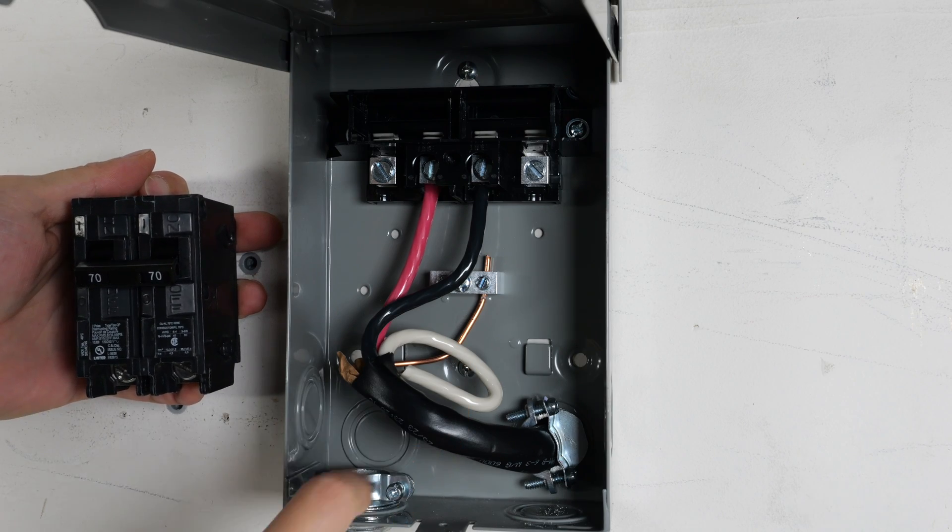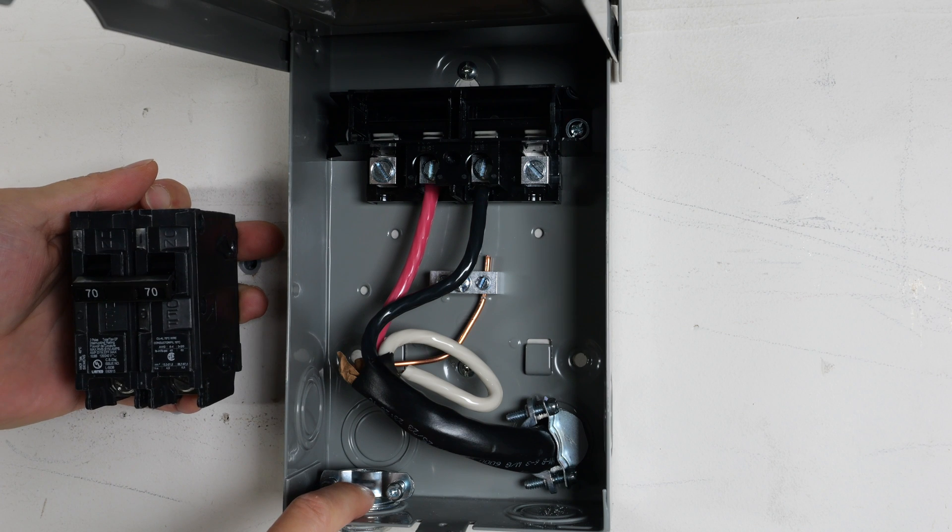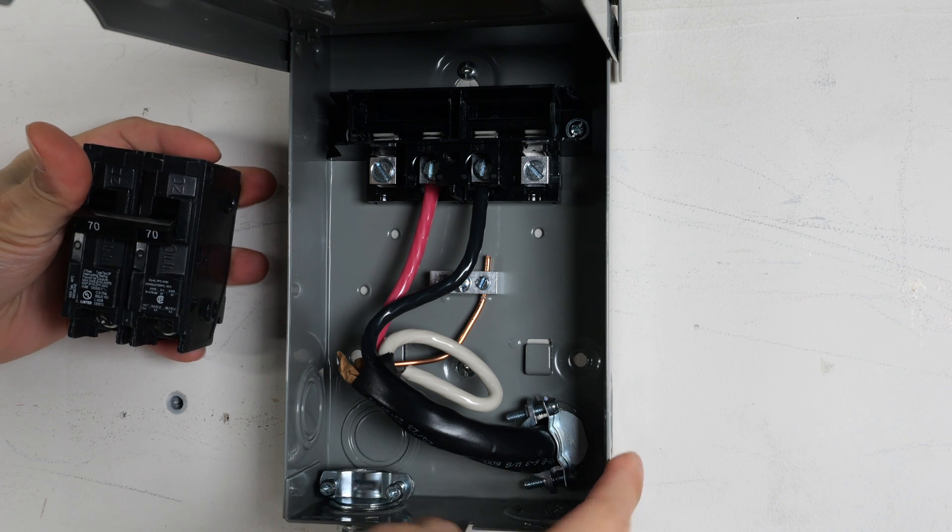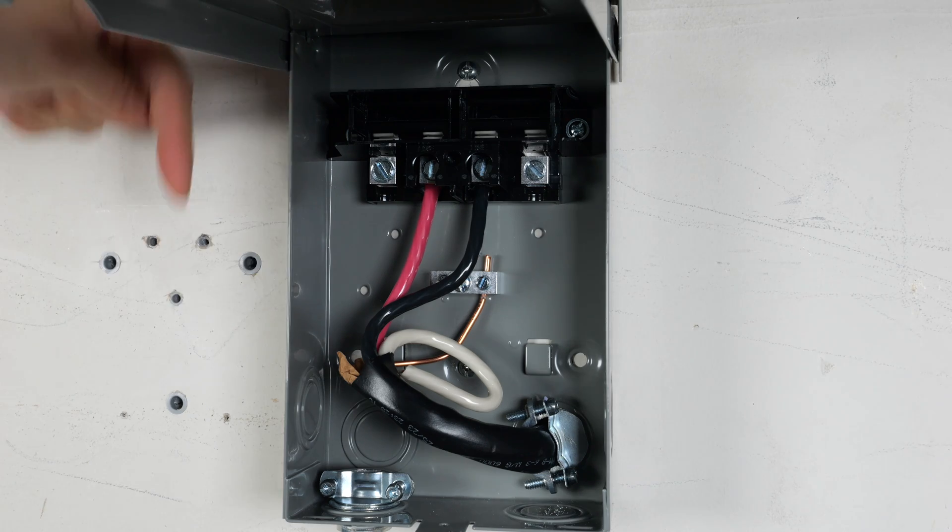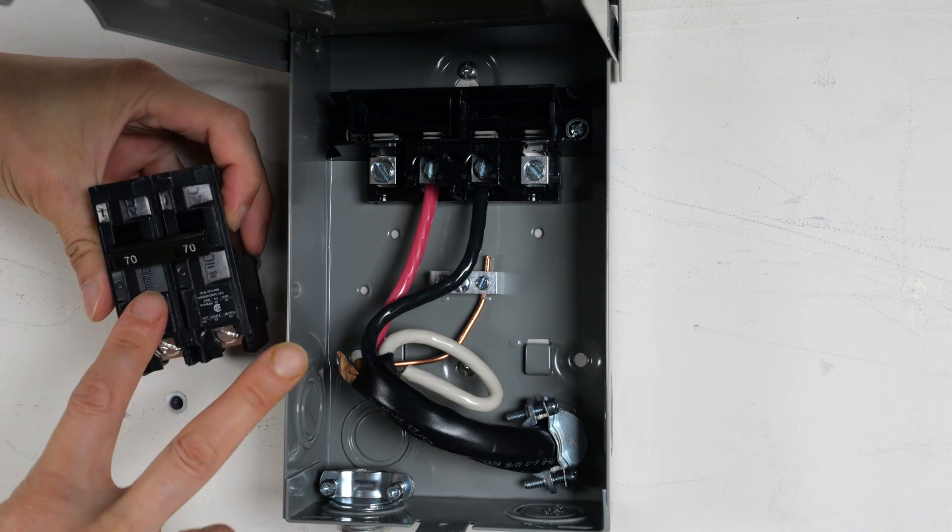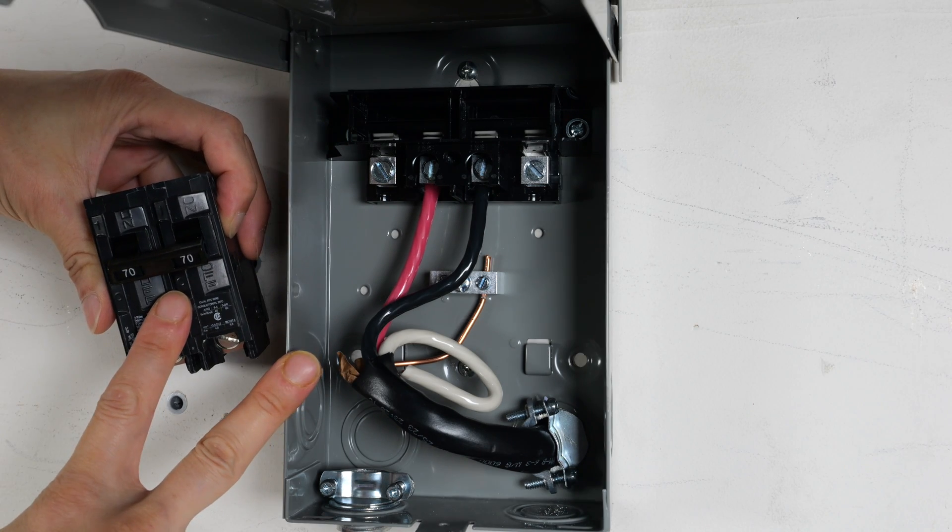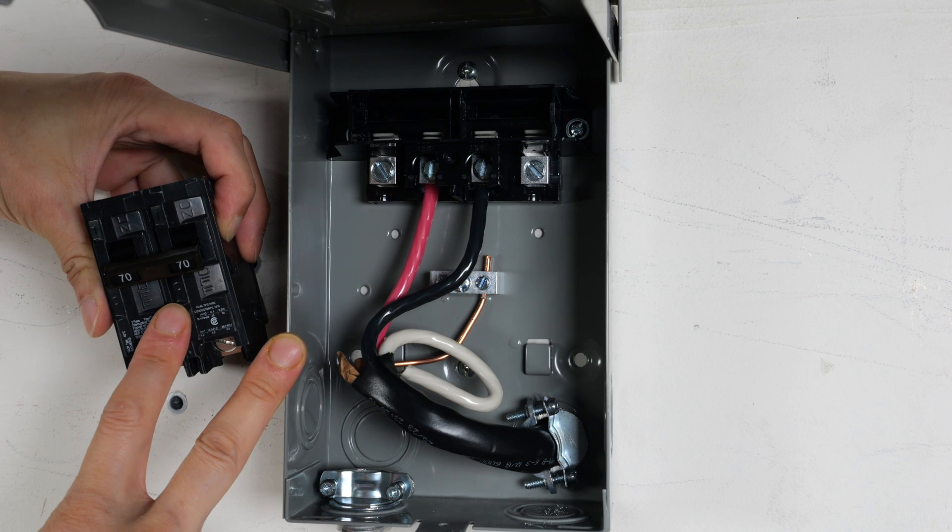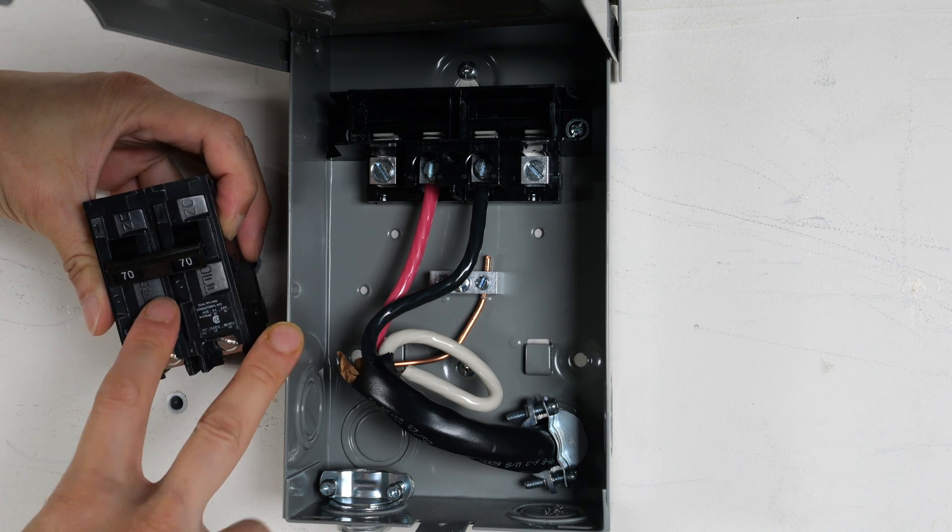I bought this six gauge wire at Home Depot. These conduit strain reliefs at Home Depot. This box is from Amazon. 70 amp breaker from Amazon. I'll leave a link down in the video description below for where to get these. Not for doing it yourself but for reference for your electrician so they can install it for you with these products.